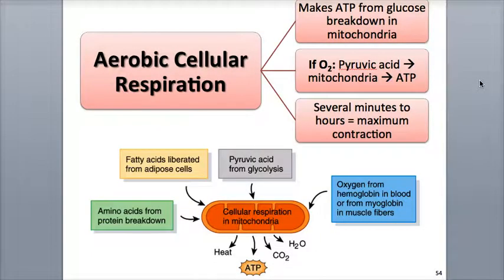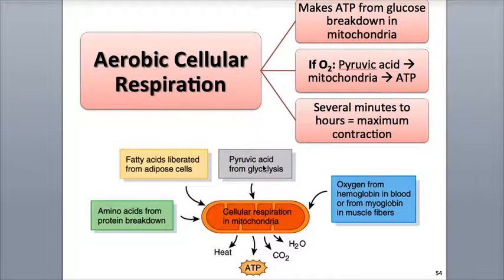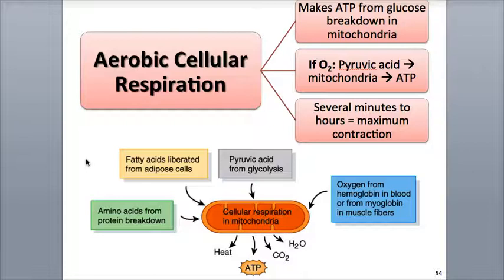Oxygen can move into muscle fibers through direct diffusion from the blood and through its release from myoglobin, which is an oxygen-binding protein similar to hemoglobin found inside the muscle fibers themselves. If during longer periods of muscle contraction there is enough oxygen available, the pyruvic acid produced from glycolysis is not converted to lactic acid and instead moves into the muscle fiber's mitochondria, where it enters into the oxygen-dependent reactions of aerobic cellular respiration.